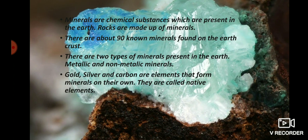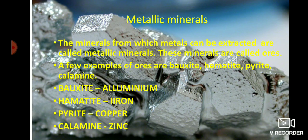Other elements like iron and copper form what are called ores. Ores are the minerals from which metals and non-metals are extracted. The minerals from which metals can be extracted are called metallic minerals, and these minerals are called ores. A few examples of ores are bauxite, hematite, pyrite, and calamine.